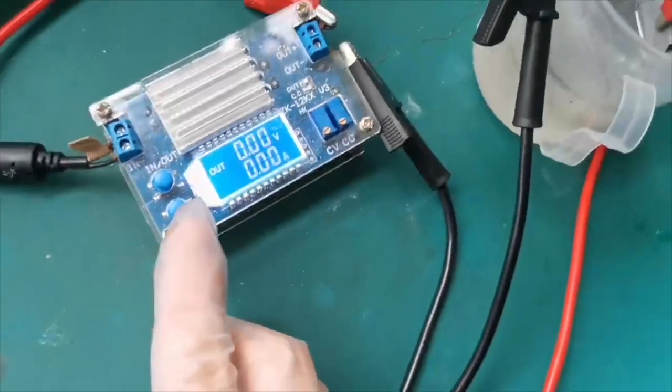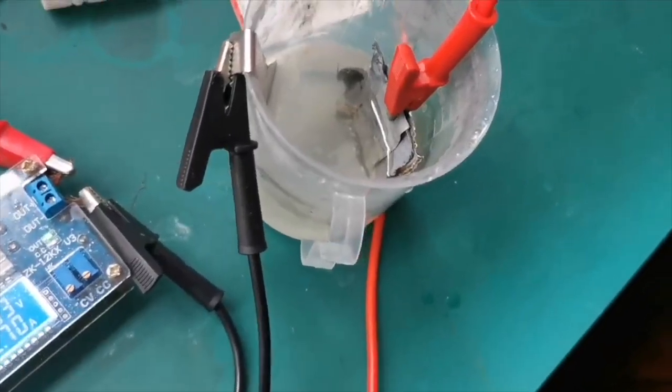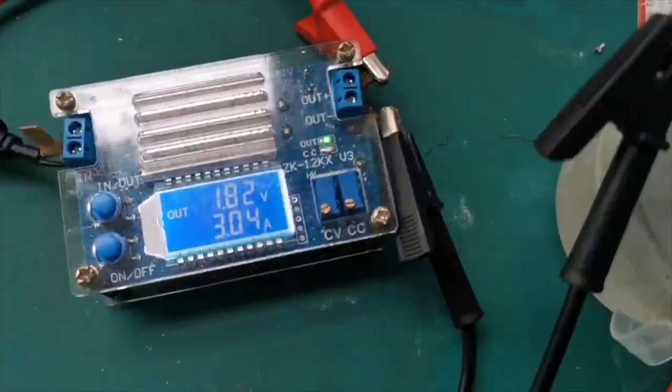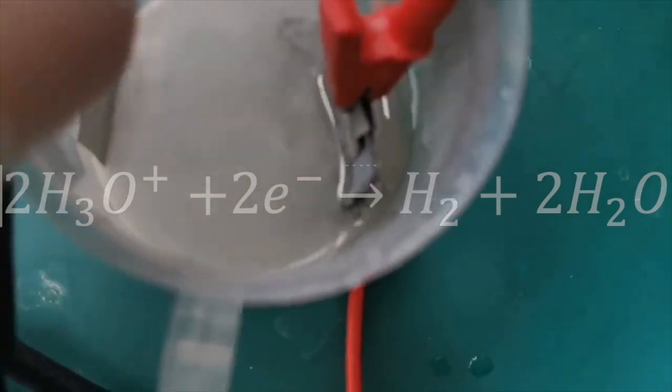And now we are ready to turn on the current. Three, two, one. There we go. The current was going around three amps and a lot of gases were forming at the cathode and this gas is just pure old hydrogen.